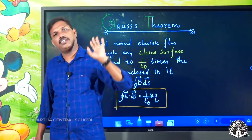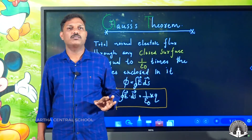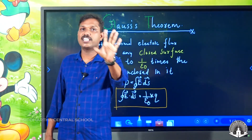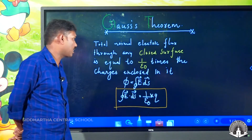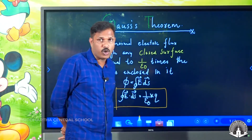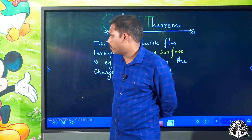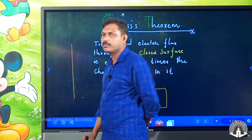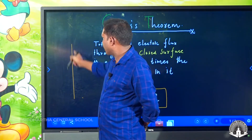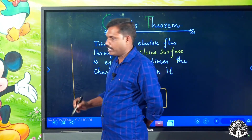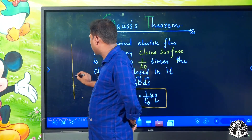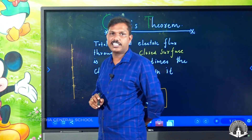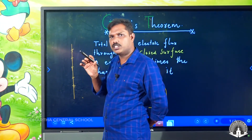What is the name of this surface in Gauss theorem? The name of the surface in Gauss theorem is Gaussian surface. That is why it is closed. Now, we have a long conductor — a long conductor that carries a positive charge.